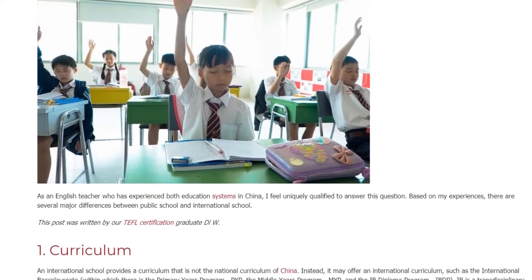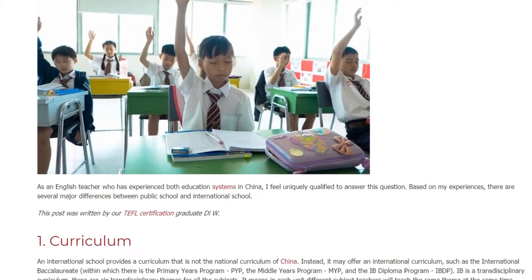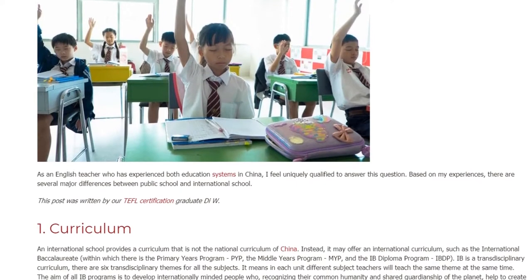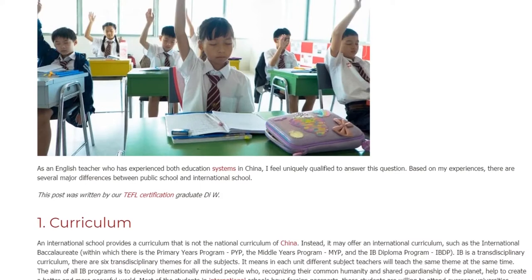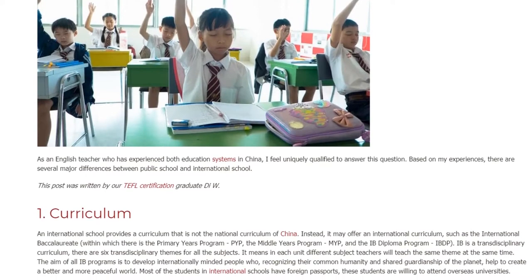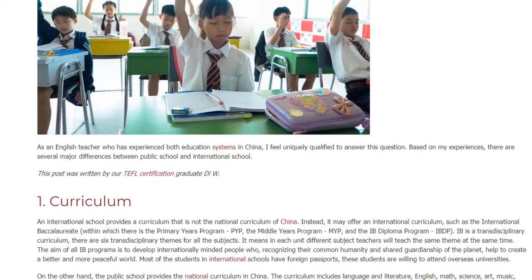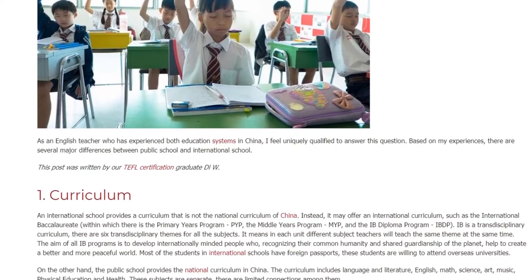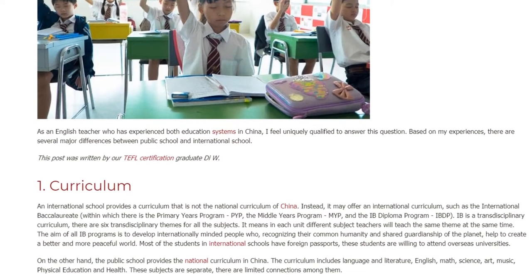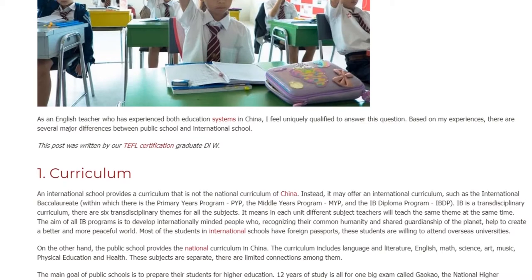1. Curriculum. An international school provides a curriculum that is not the national curriculum of China. Instead, it may offer an international curriculum, such as the International Baccalaureate, within which there is the Primary Years Program, the Middle Years Program, and the IB Diploma Program. The IB Diploma Program is a transdisciplinary curriculum.